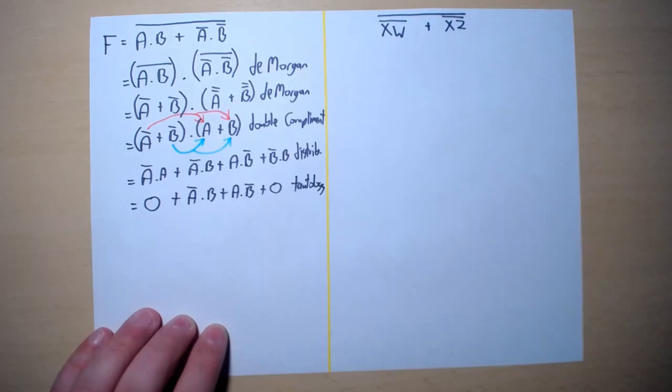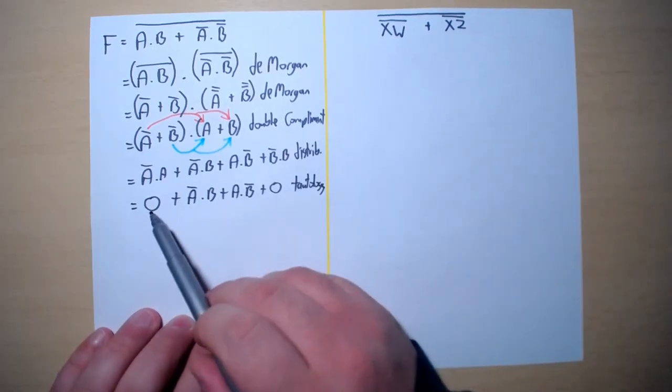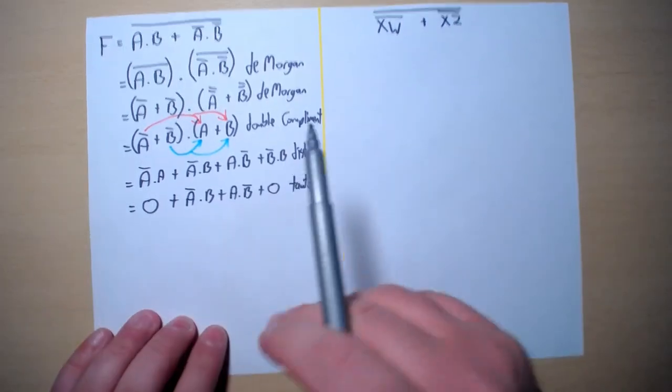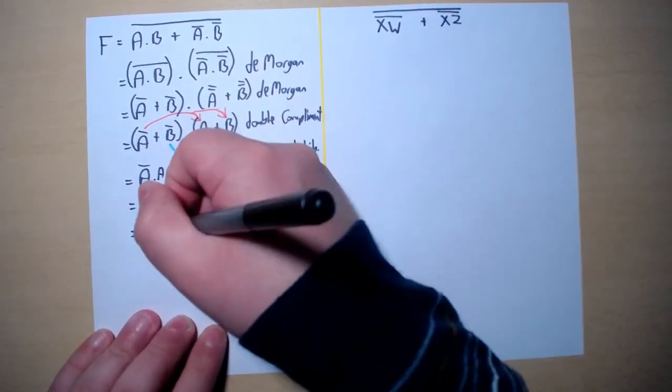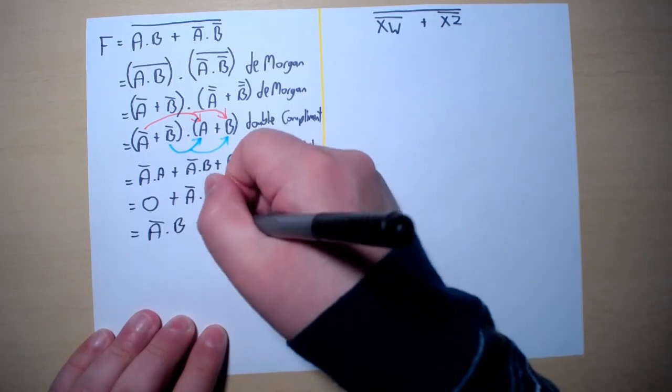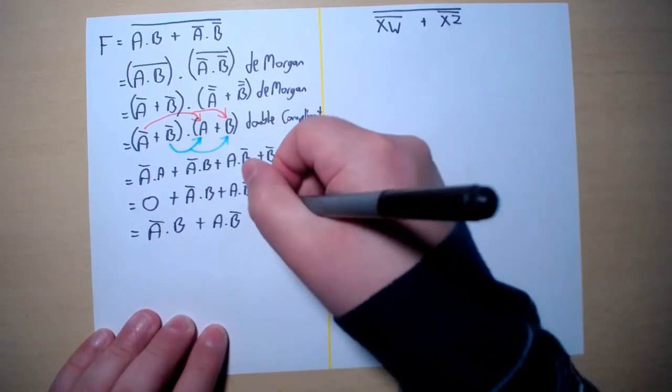Using tautology we also know that zero OR something else will give us that something else. Therefore we can eliminate the zeros to obtain A naught and B or A and B naught.